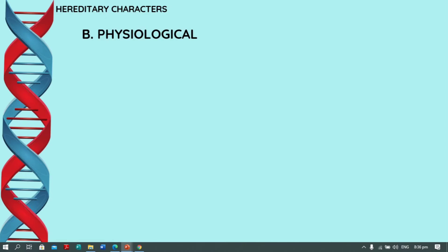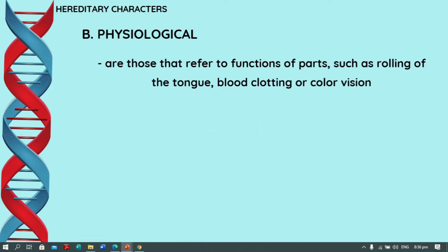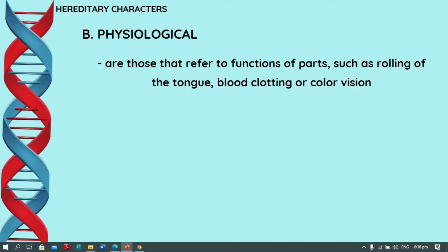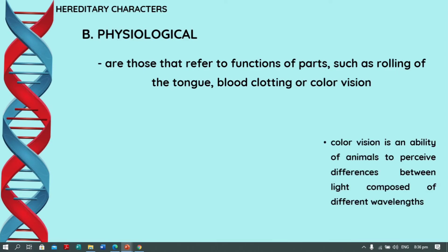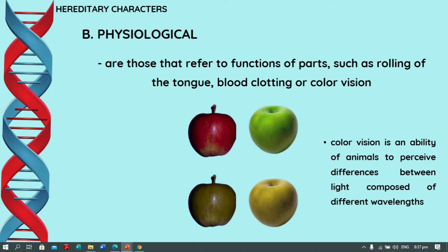Next is physiological character. Physiological characters are those that refer to the functions of parts, such as rolling of the tongue, blood clotting, or color vision. When we say color vision, it is an ability of animals to perceive differences between light composed of different wavelengths. The most common colors of apples — red or green — is what someone sees with normal color vision.